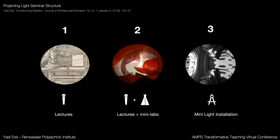In order to unpack the impact of different settings, I will refer to the course's structure investigated in depth in my paper, Constructing Mystery: a Pedagogy for Projecting Light, published in JAE. The Projected Light Seminar is scaffolded as a series of lectures focusing on different aspects of light — from understanding light as a basic material to studying the relationship between light and projection, shadow, camera obscura, reflection, and color. The lectures are accompanied with mini-labs or student-run experiments that culminate in a final light installation.